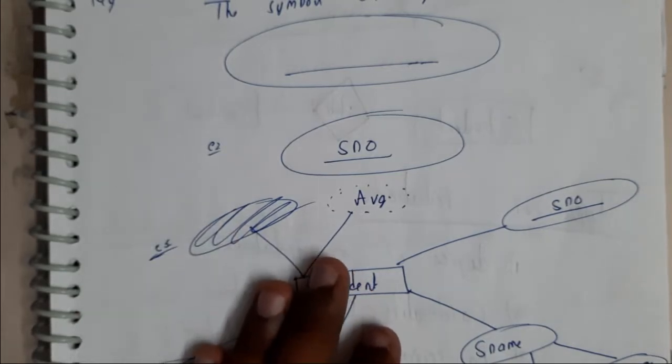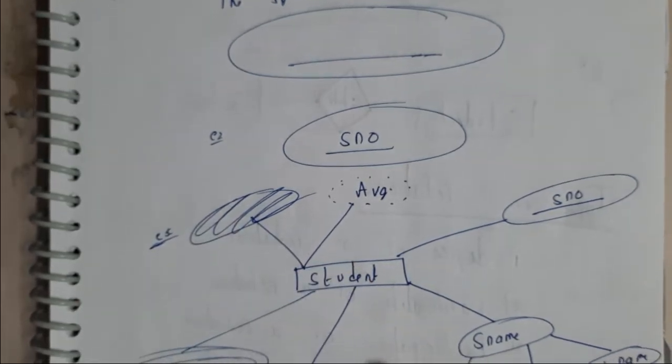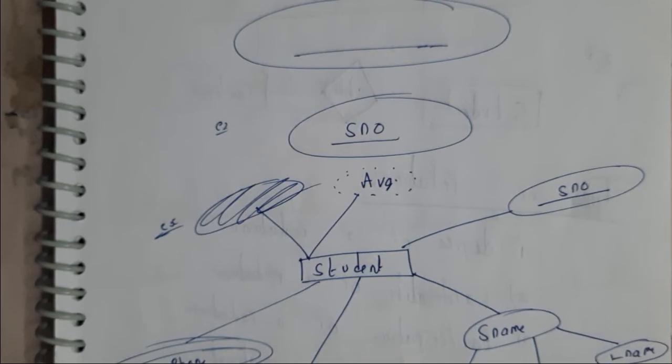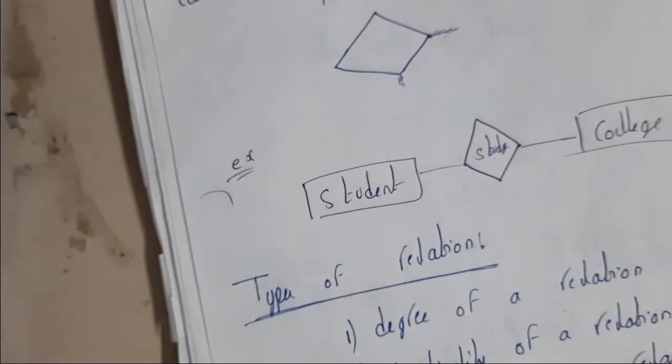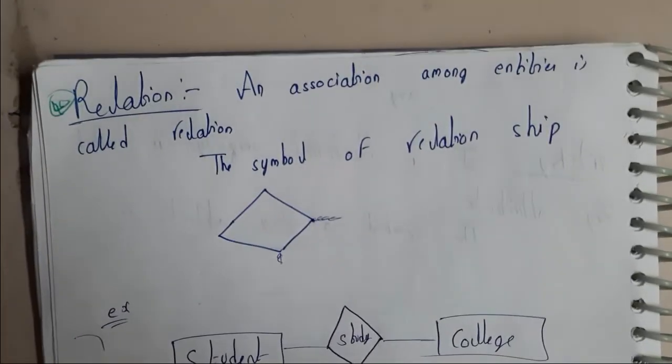Student name is the composite attribute, and average is the derived attribute. So to summarize our student entity example covers all six attribute types. In the next tutorial, we will start about relations and their types. Thank you for watching.